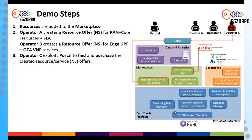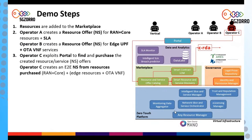Step three: Operator C exploits the portal to find and purchase the offers created by Operator A and Operator B. Operator C then purchases those offers and creates, using them, a brand new composite offer representing the end-to-end service that will be purchased by Operator E — the new automotive stakeholder joining the platform.